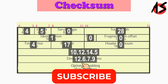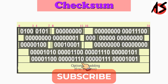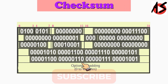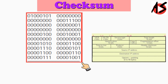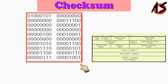Now we convert all fields into binary and the header is divided into 16-bit sections. All the sections are added to get the checksum. Starting the sum from the right: 1 plus 1 plus 1 plus 1 plus 1 gives 4, which is 100 in binary. So we put 0 here and 10 is taken as carry.